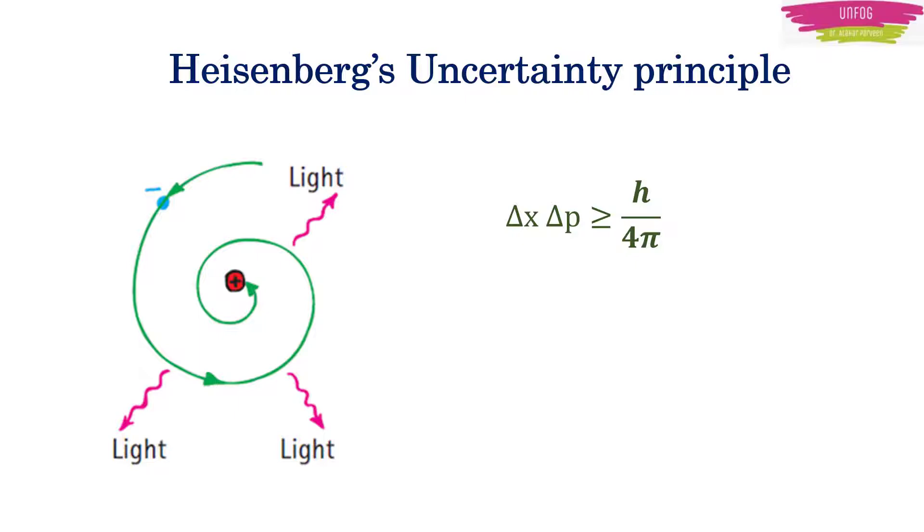Assume for a while that the electron radiated energy and has fallen down into the nucleus. Now as electron is in the nucleus, we exactly know its position, right? So there's no uncertainty in the position of electron now.